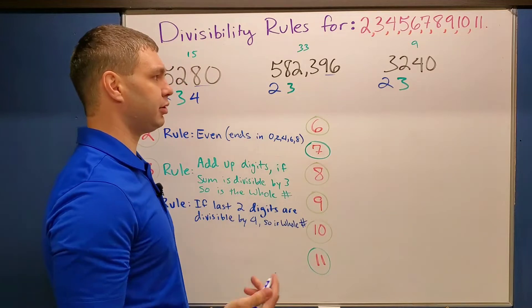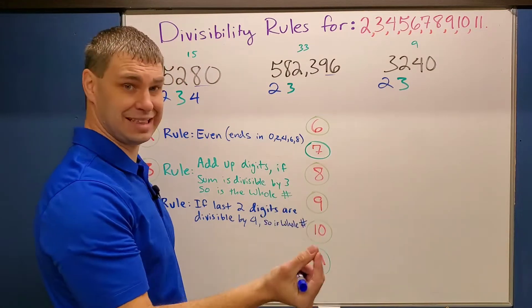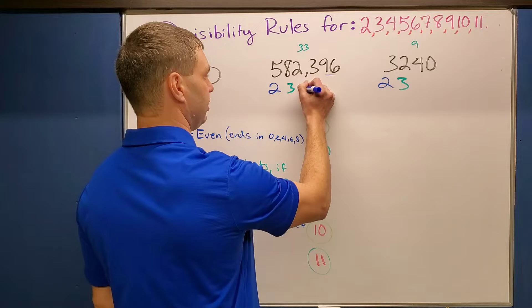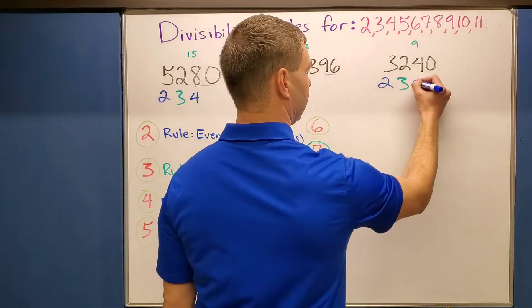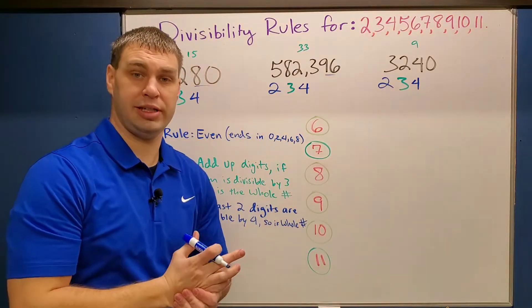What about this one, 96? Well, let's see, four goes into nine twice with 16 remainder. 16 is divisible by four, so yes, this would also work. And then 40 is 10 times four, so our other one would work. So far, they all are divisible by two, three, and four.